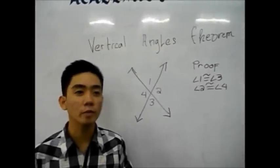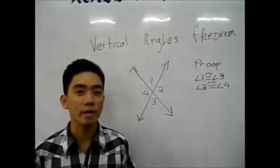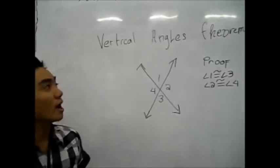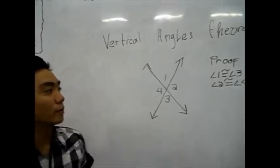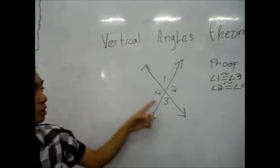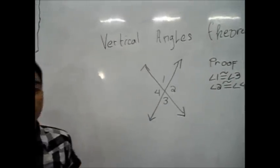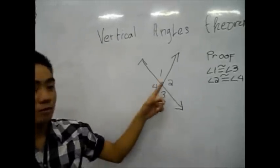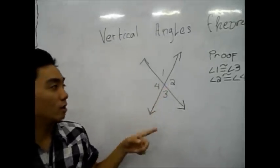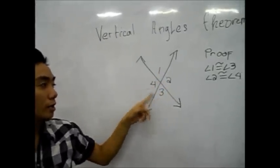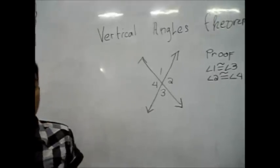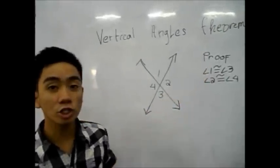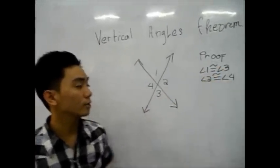I am one of the members of Group 7 and our topic is all about the vertical angle unit. Given two lines intersect and form four angles — Angle 1, Angle 2, Angle 3, and Angle 4 — we will prove that Angle 1 is logically equivalent to Angle 3.